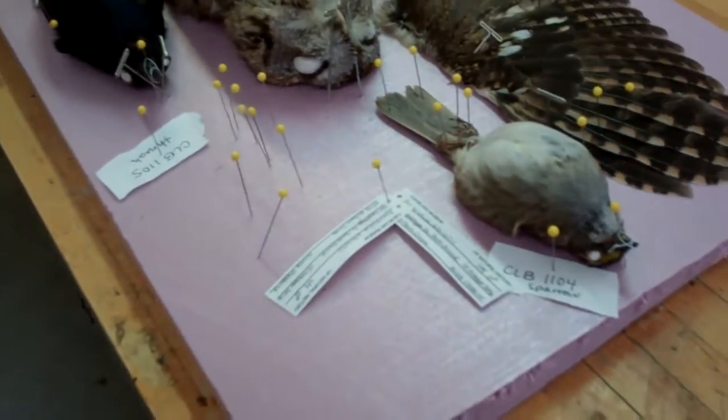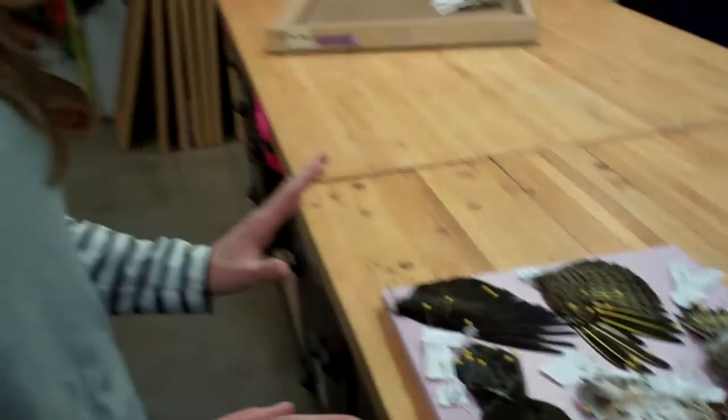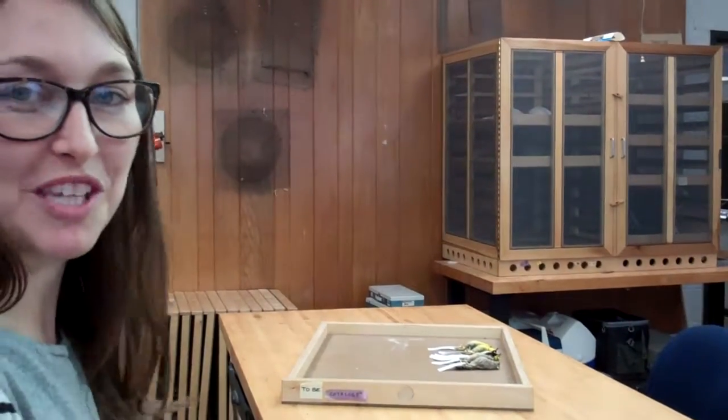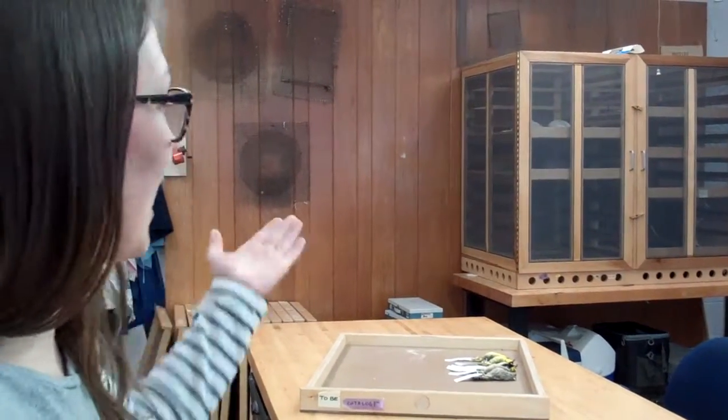We just pin them in the position we want them to stay and just leave them in this awesome drying rack built by one of our museum carpenters. They'll just hang out in the drying rack for about a week if it's a small bird, a few weeks if it's a larger bird, until the skin is fully dried.